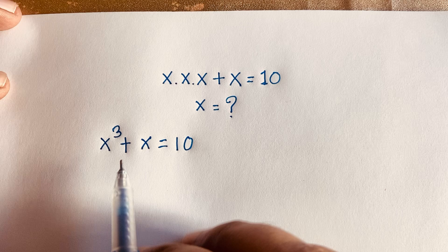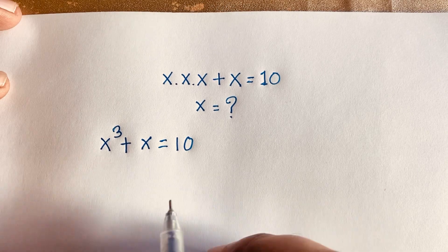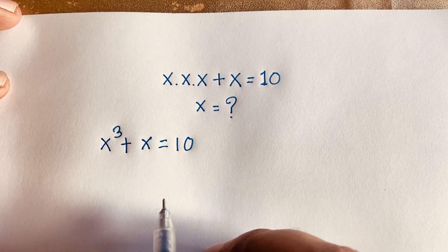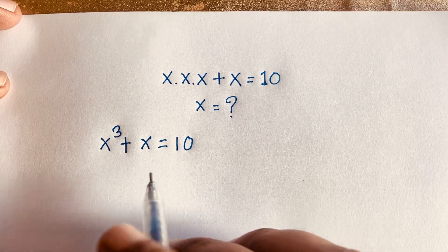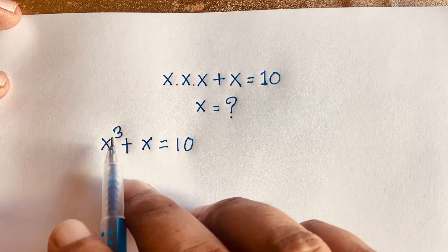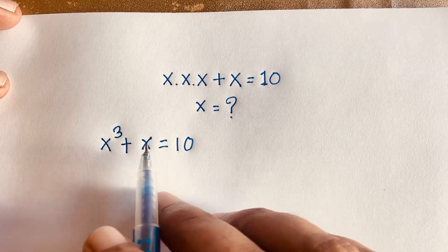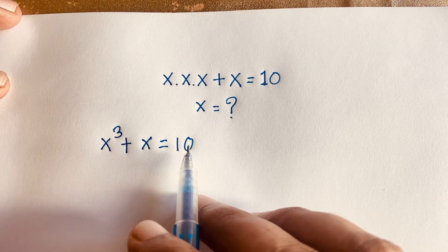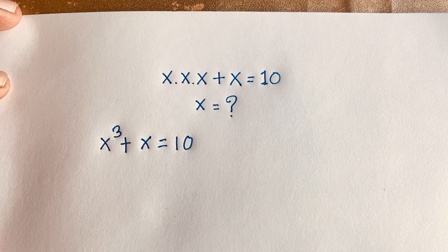At this moment, if you think x is equal to 1, so 1 to the power 1 plus 1, it is not equal to 10. So if you think x is equal to 2, then 2 to the power 3 will be 8, and 8 plus 2 will be 10. So you can see easily our final answer is x is equal to 2. But how to solve this question? We'll find out our complex solution.